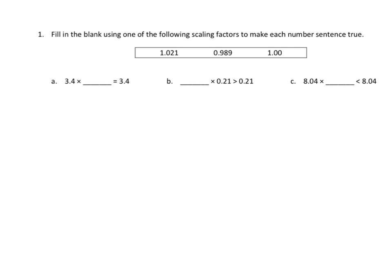If I multiply a number by another factor that's greater than one, I'm going to end up with a product that's greater than the original factor. If I multiply a factor, say 3 and 4 tenths, by a factor that is less than one, I'm going to end up with a smaller product than the original factor. And if the number is multiplied by one, the product is going to be equal to the original factor.